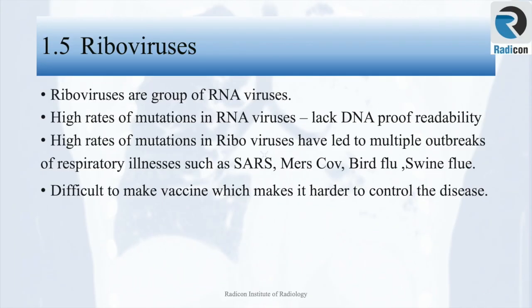Riboviruses are a group of RNA viruses. They are extremely diverse genetically and almost all living organisms, including unicellular ones, have them. They have very high rates of mutation as they lack DNA proof-reading ability. High rates of mutation in riboviruses result in new viral strains and make it extremely difficult to make an effective vaccine. Riboviruses have led to multiple outbreaks of respiratory illnesses such as SARS, MERS-CoV, bird flu, and swine flu.